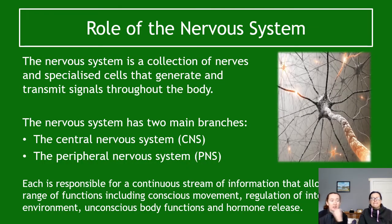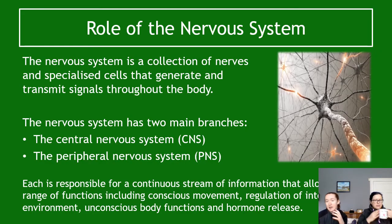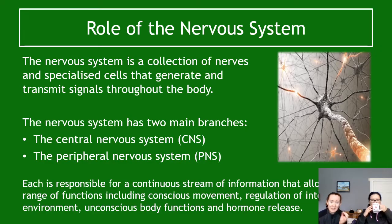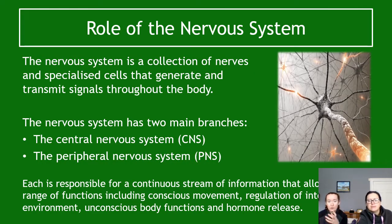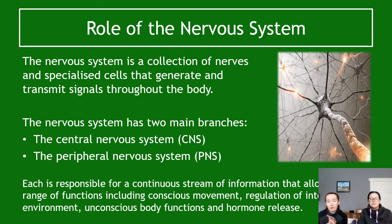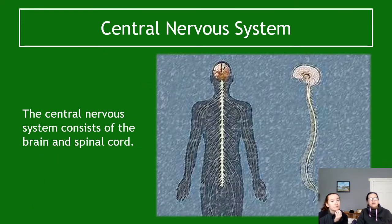Your nervous system has two main branches. The first is the central nervous system, or CNS, which you already know about. The second, which at Nat 5 was just called 'other nerves,' is the peripheral nervous system, or PNS. It's useful to know what these abbreviations stand for because they tell you where they are in the body. Each is responsible for different things, and a diagram at the end will show you exactly their roles.